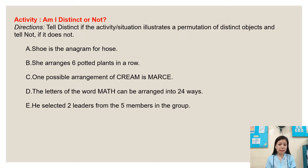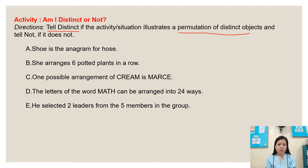Now we have an activity: Am I Distinct or Not? Direction: tell 'distinct' if the situation illustrates a permutation of distinct objects, and 'not' if it does not. We all know that permutations of distinct objects involve different objects. Number one: 'shoe' is an anagram for 'hose.' The answer is distinct.